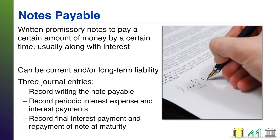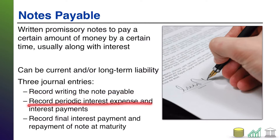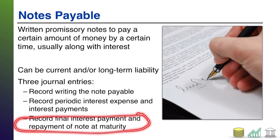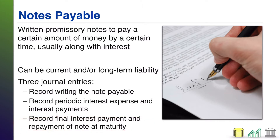Notes typically involve three journal entries: first, the day you write the note or essentially borrow the money; second, any time that interest is either accrued because you hit a period end or paid out because you hit a payday; and third, a final interest payment along with repaying the principal balance of the note. Those are the three common journal entries related to both notes and the related interest payable.